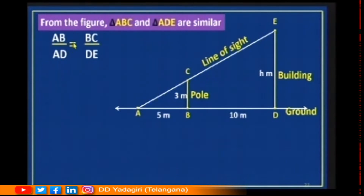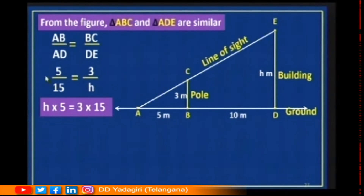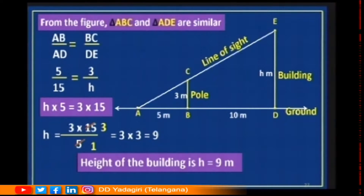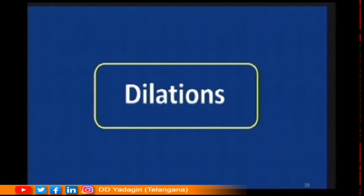The corresponding side of AB is AD, and the corresponding side of BC is DE. So AB/AD = BC/DE. AB is 5, and AD is 5 plus 10 which equals 15. So 5/15 = 3/h. After cross multiplication: h × 5 = 3 × 15. So h = (3 × 15) / 5 = 9. The height of the building is 9 meters. Like this we can apply the concept of similarity in finding unknown heights.